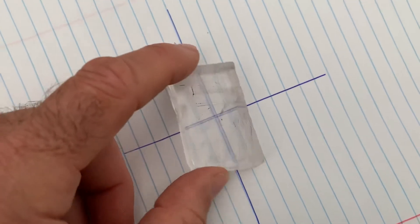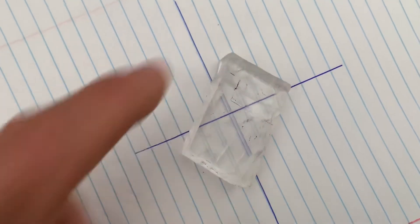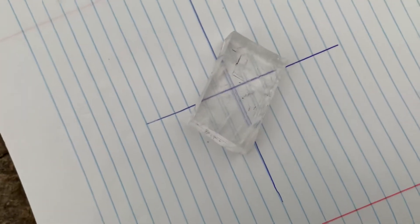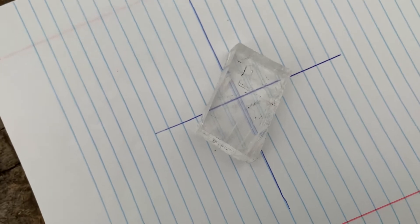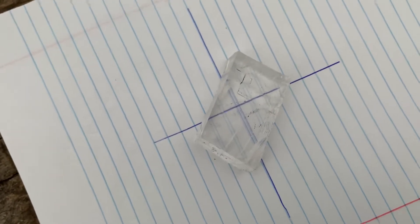But what I really think is happening, which I know is happening, is that's just the double refraction of the Iceland spar. It has nothing to do with the direction of the sun.